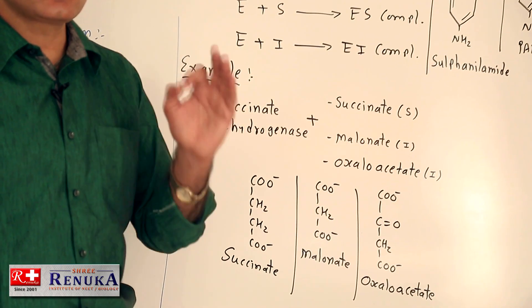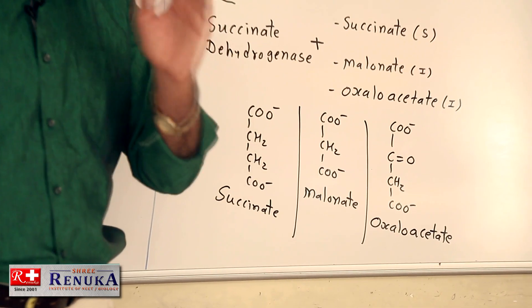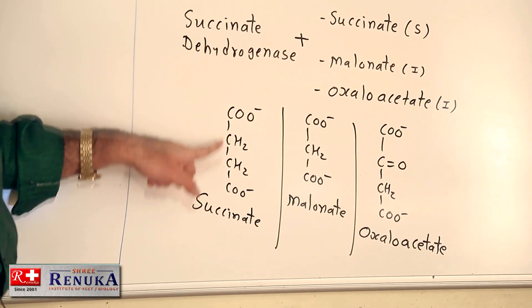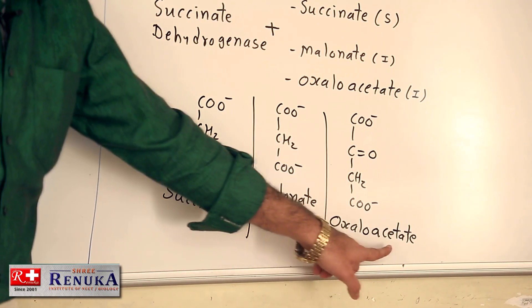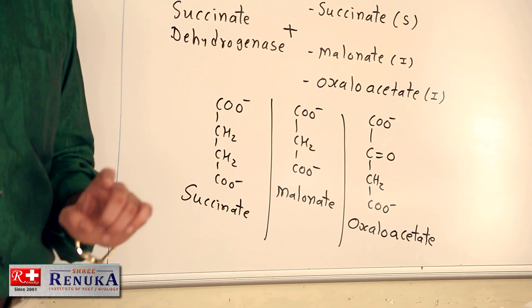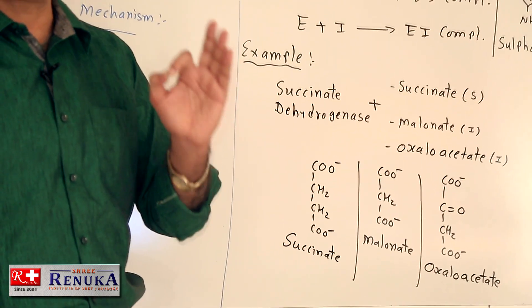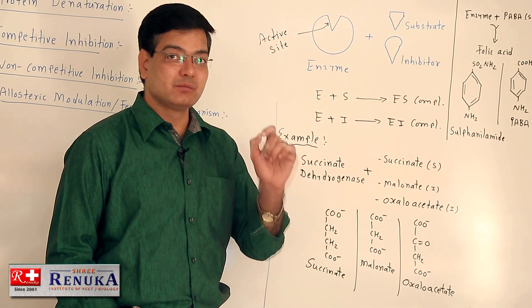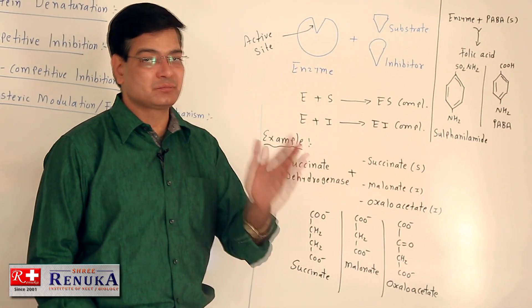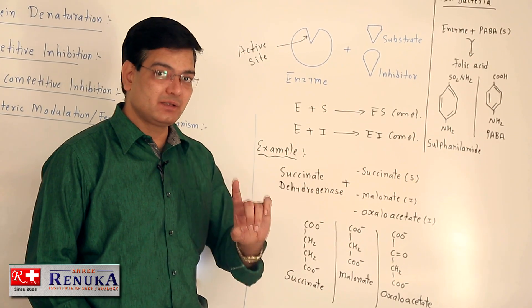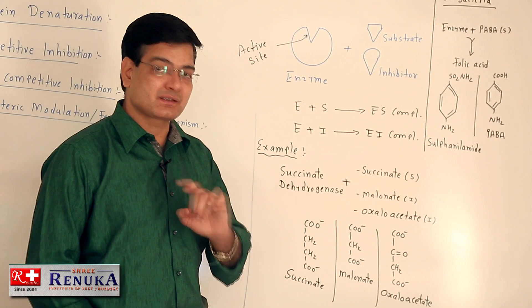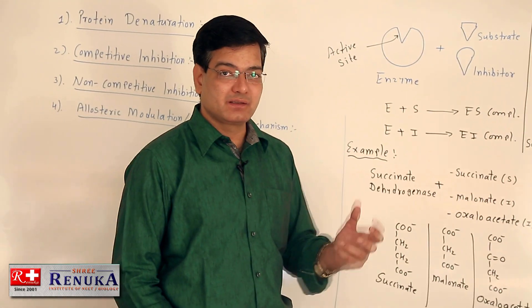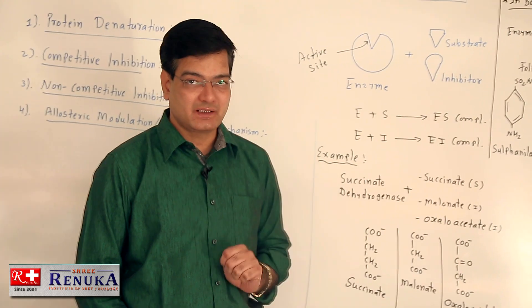Succinate is an anion with negative charges on both ends. Similarly, malonate and oxaloacetate also have negative charges on both ends, so they can easily react with the active site and compete with succinate. In such cases, the substrate concentration must be higher than the inhibitor for the reaction to proceed. If the inhibitor concentration is higher, the inhibitor binds with the enzyme — it is a competition between substrate and inhibitor for the active site.